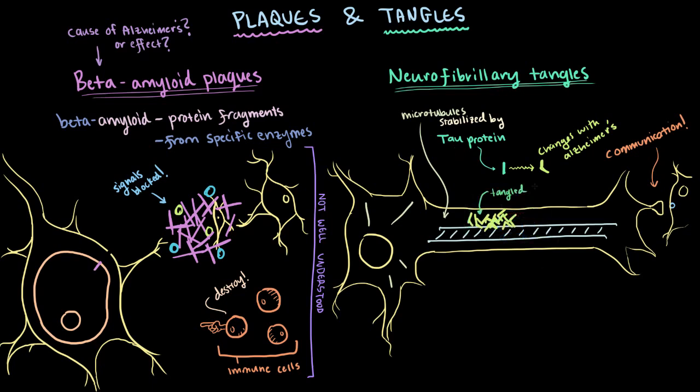And since the tracks don't have anything holding them together anymore, what do they do? Well, they start to fall apart. And so our microtubules fall apart and these tau proteins become tangled.